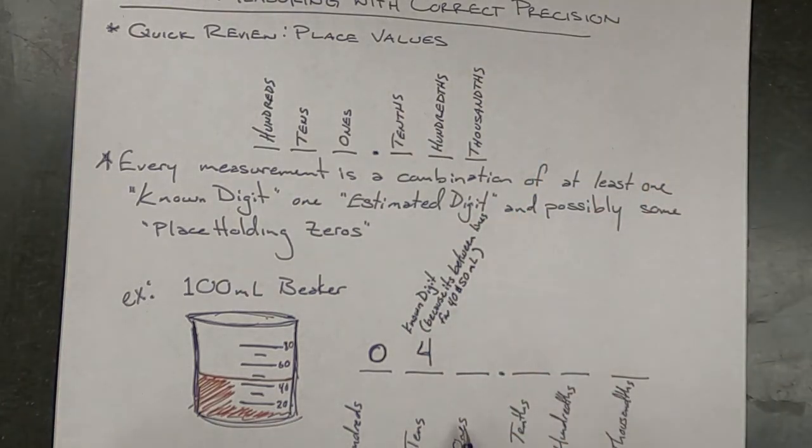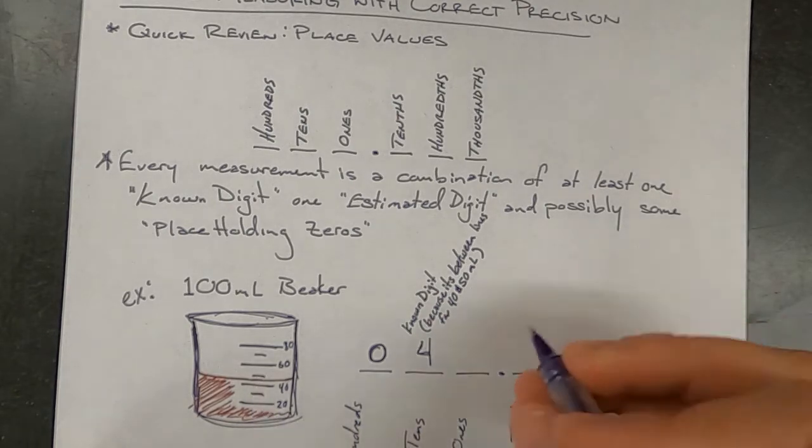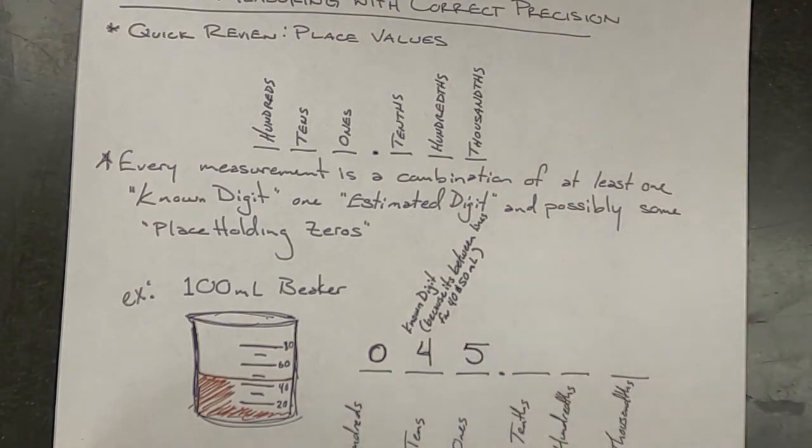The ones place is what we're going to look at next. And we're going to decide where is it between 40 and 50. We're going to estimate where it is. Now some people might estimate that it's a little bit lower or a little bit higher, and that's all right. That's why it's an estimate.